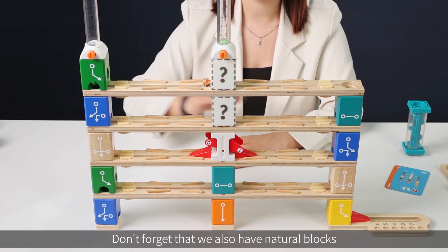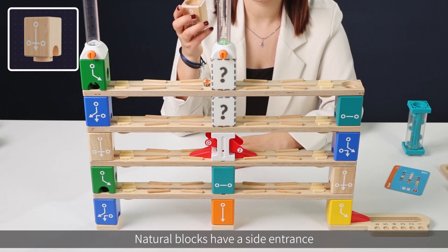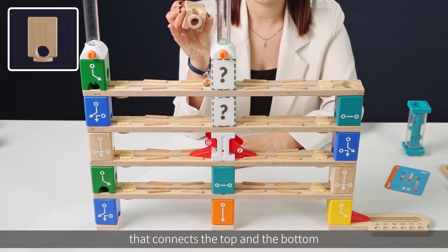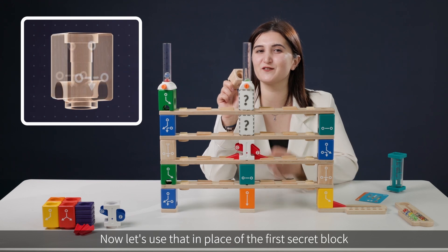Don't forget that we also have natural blocks. Natural blocks have a side entrance and one straight path that connects the top and the bottom. Now let's use that in place of the first secret block.